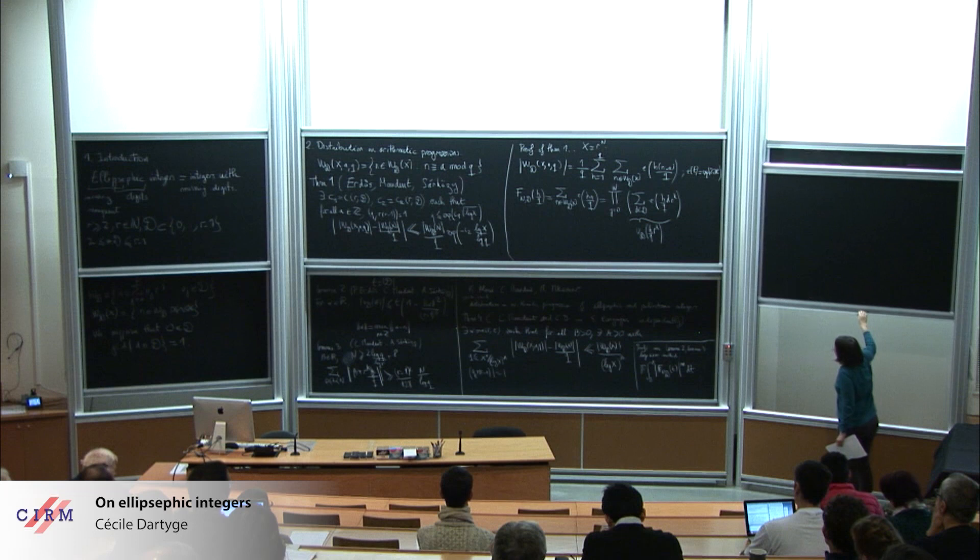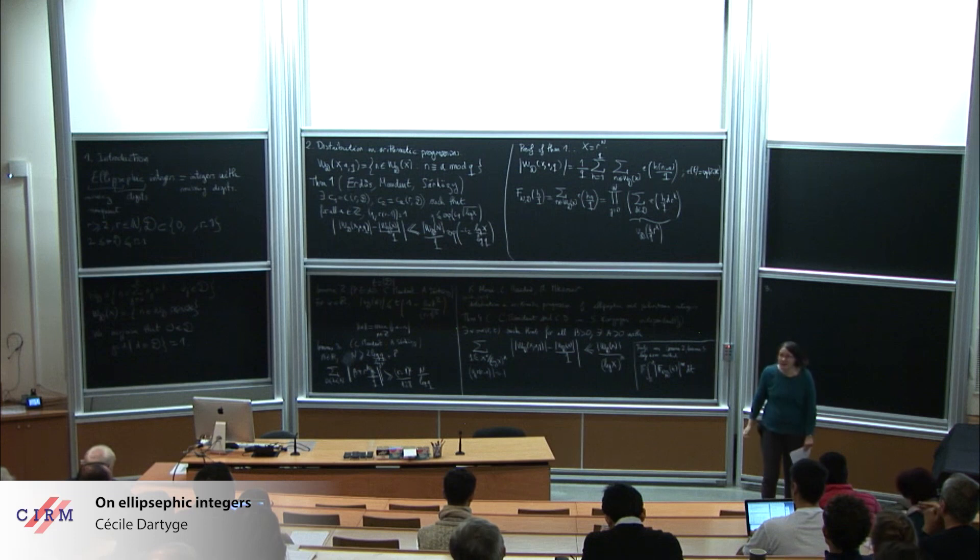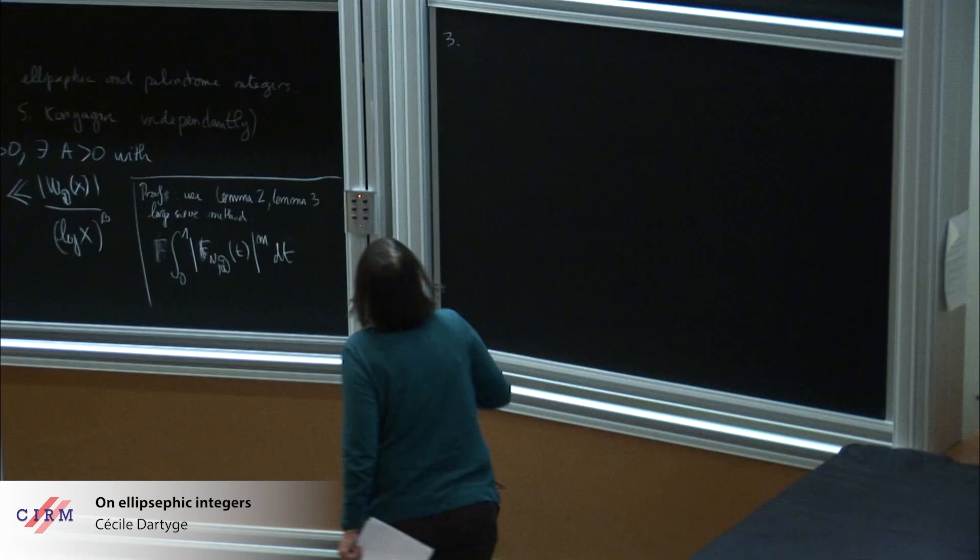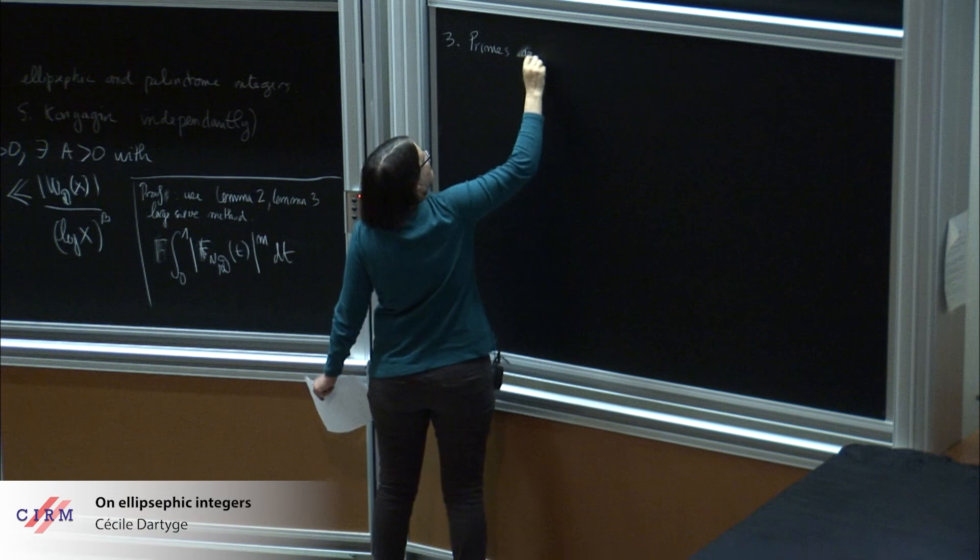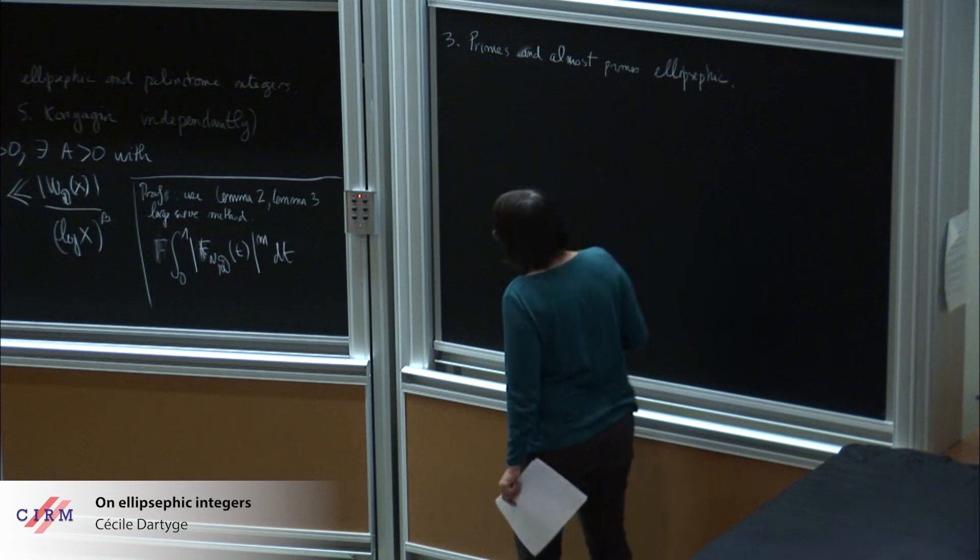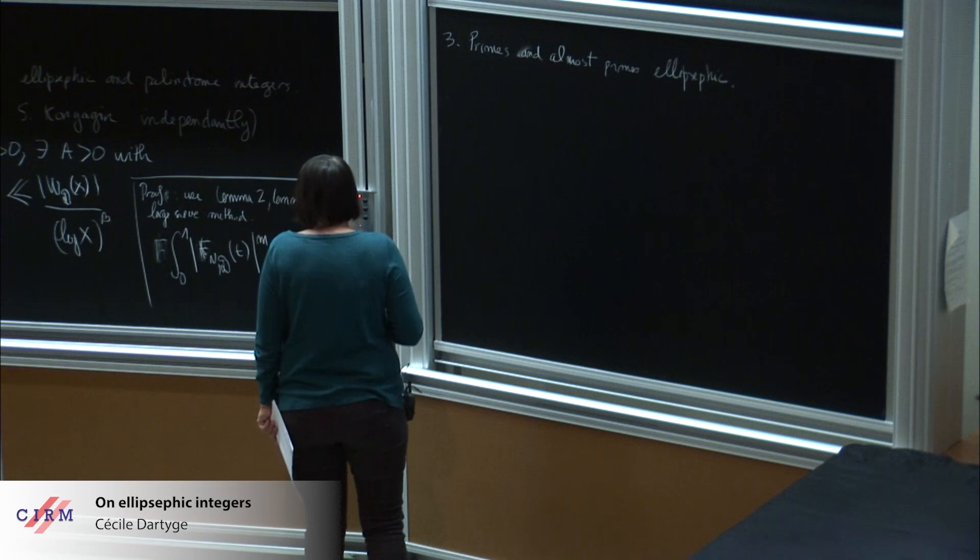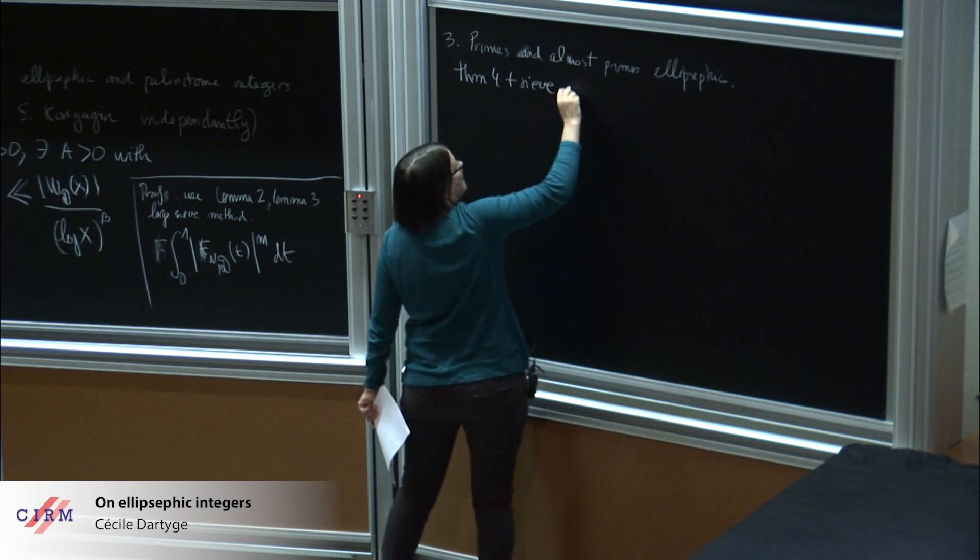Now when we have an argument like that, we can use sieve method and detect not primes already but almost primes. It is the next section - primes or almost prime ellipsific. If we apply theorem 4 plus sieve method, we arrive at theorem 5. It was with Christian only.